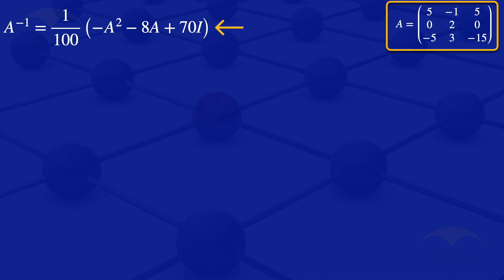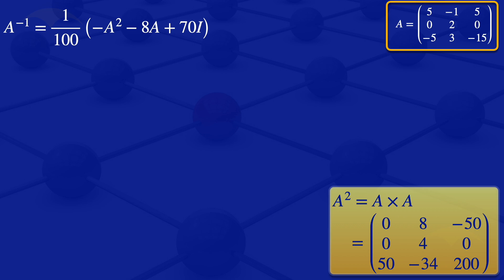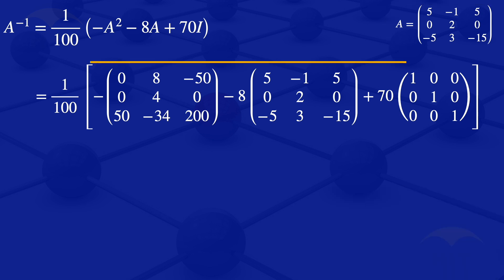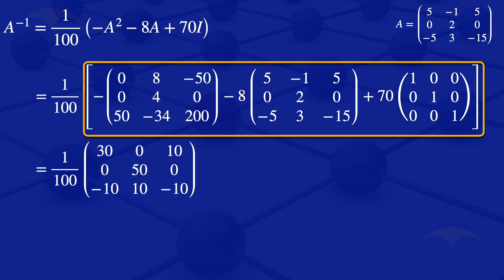In the formula for A inverse we need A squared. A squared equals A times A. By matrix multiplication, row by column, A times A gives us 0, 8, minus 50, 0, 4, 0, 50, minus 34, 200. We then substitute A squared, A, and the identity matrix into the formula: 1 over 100 multiplied by minus A squared minus 8 times A plus 70 times the identity matrix. Combining the matrices by adding and subtracting corresponding elements gives the matrix 30, 0, 10, 0, 50, 0, minus 10, 10, minus 10.